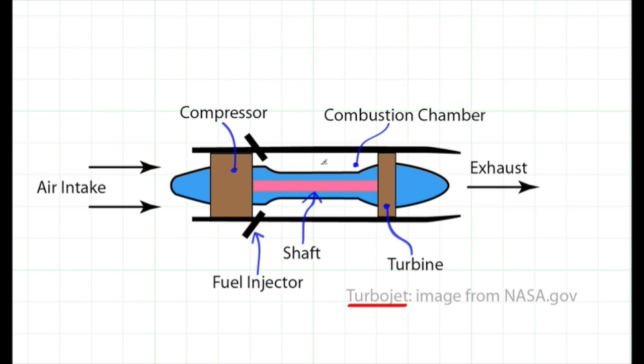Then the air fuel mixture is burned, and the rise in temperature and increase in pressure all change the density. The air goes through a turbine, which again changes the density. The point is that the density of the fluid is changing at every point as it moves through this jet engine.